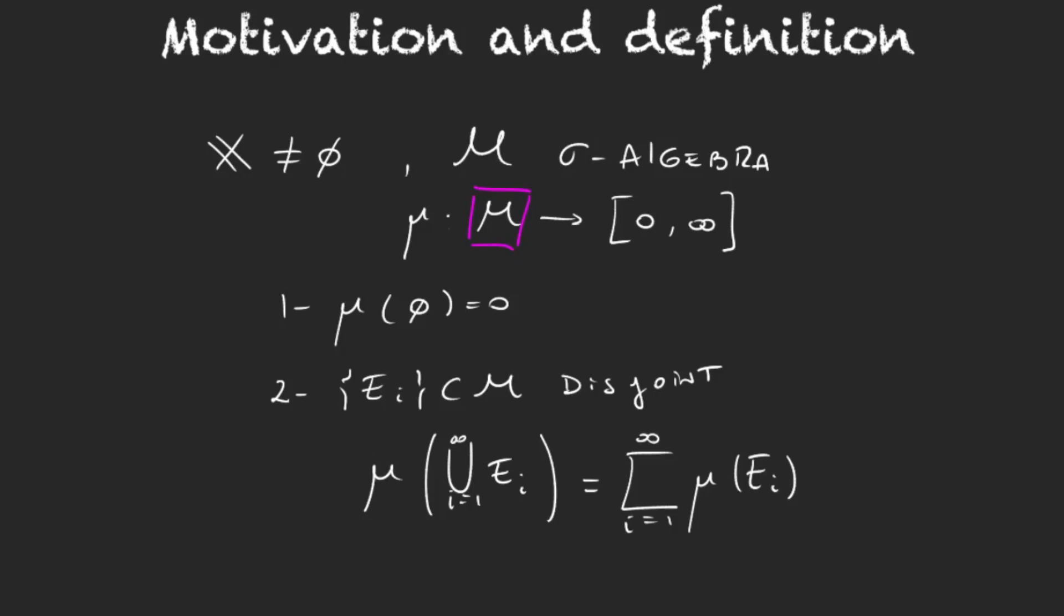The first property of the measure is quite simple. We want the empty set to measure nothing. But the second property is actually very complicated. We want, for any disjoint sequence in the sigma algebra, an equal sign here. And this is super complicated. Can you see how powerful this property is?